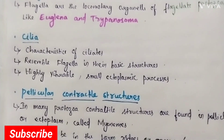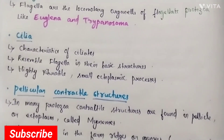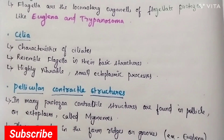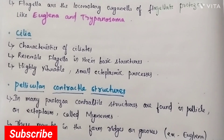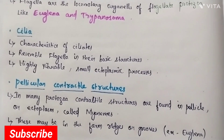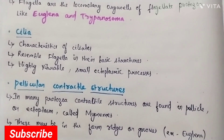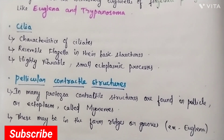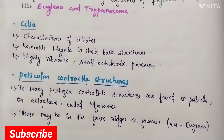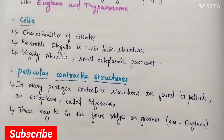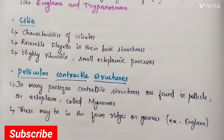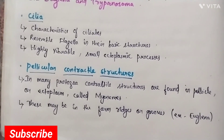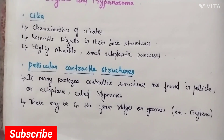Pellicular contractile structures: in many protozoans, contractile structures are found in the pellicle or ectoplasm, called myonemes. These may be in the form of ridges or grooves. Example: Euglena.